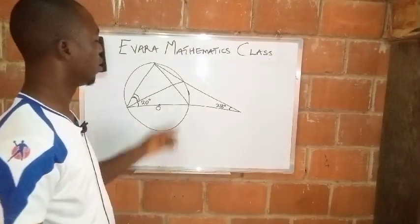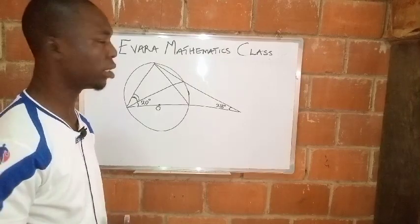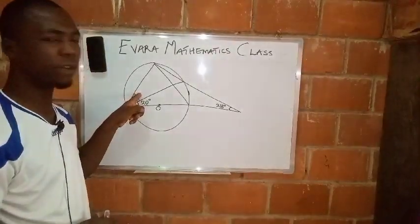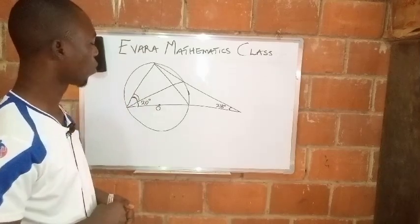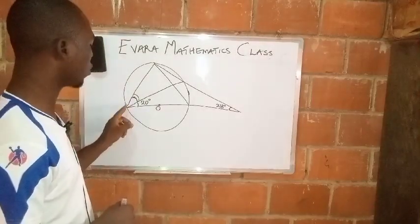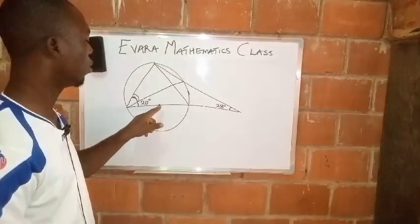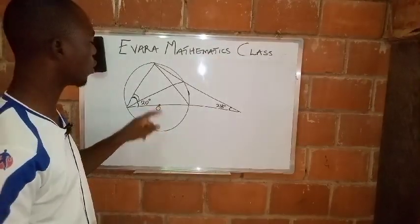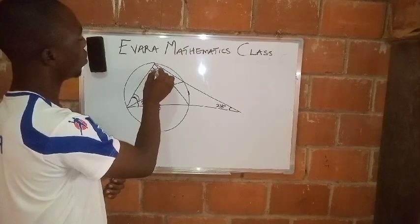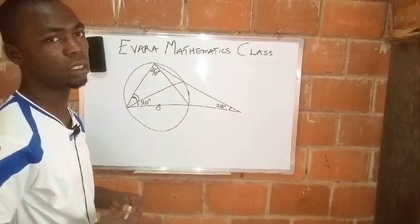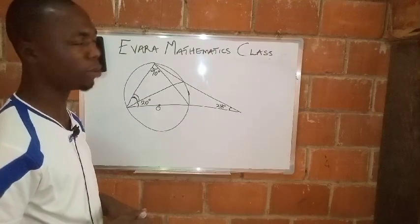Hello everyone at home. Here is a question on a cyclic quadrilateral and we are to find the value of this angle here. From the question we can see that here is the diameter and this is the center of the circle. So if this is the center of the circle, that means this angle is 90 degrees — that is the angle in a semicircle.